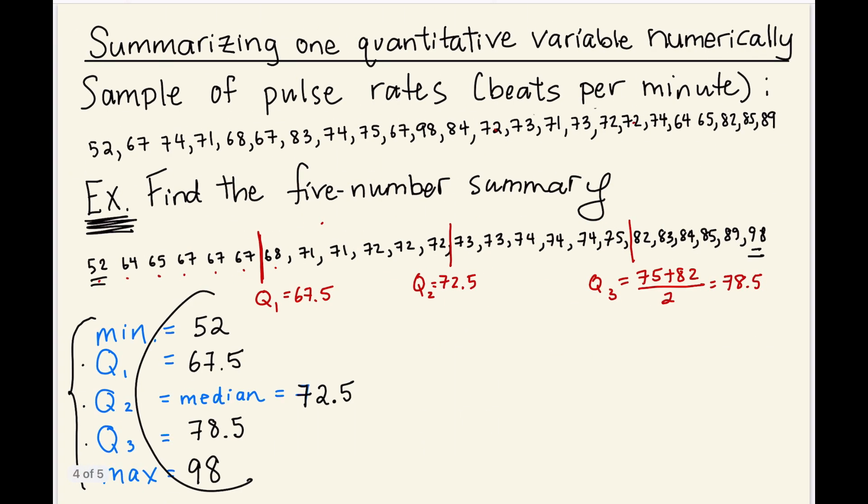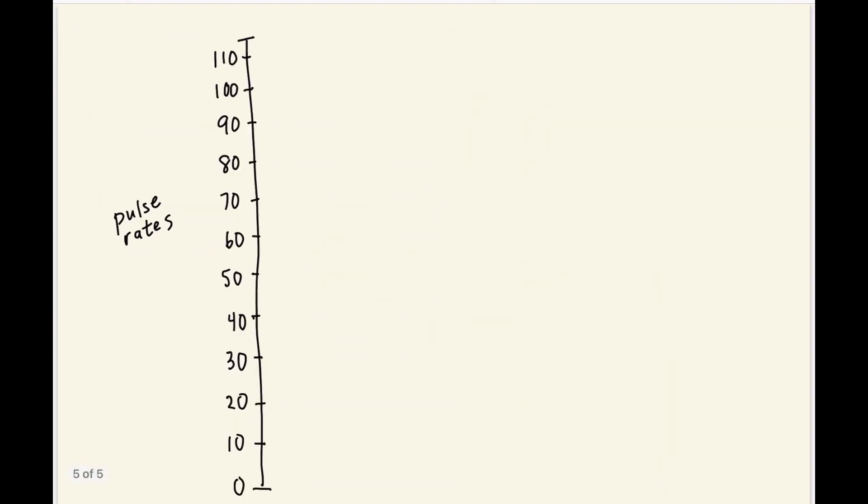So maybe I start the graph at zero and then we have 10, 20, 30, these are for pulse rates, 40, 50, 60, 70, 80, 90, 100, 110. So these just represent pulse rates. And what I'm going to do next is I'm just going to use my five number summary, which is 52, 67.5, 72.5, 78.5, and 98. And I'm just going to plot those on my graph here.